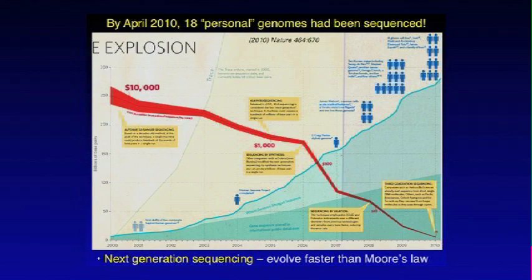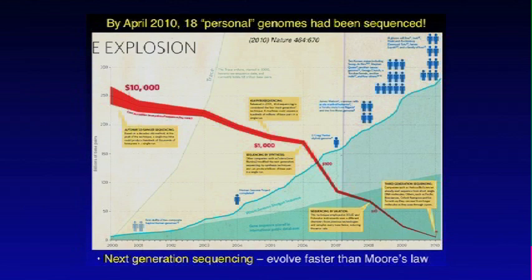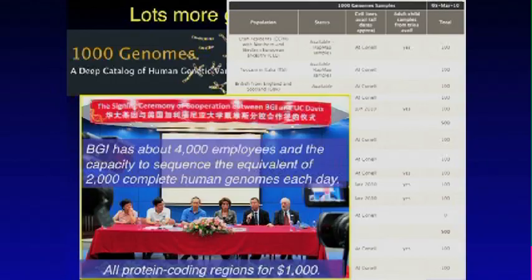New sequencing technologies emerged, and up to a certain point DNA sequencing technology was basically following Moore's Law — the principle that the number of transistors on a microchip doubles every 18 months. Now it's actually evolving faster than computer technology. When this slide was made a couple of years ago, there were 18 personal genomes sequenced; by now there are over 10,000. It went from $3 billion at the beginning of the decade to around $5,000 today, and there's been a lot of explosion of interest and advancement in this area.